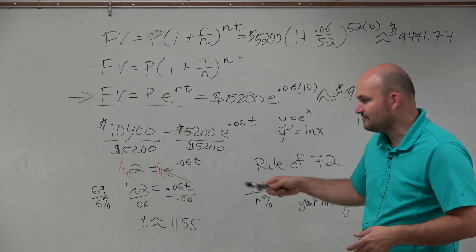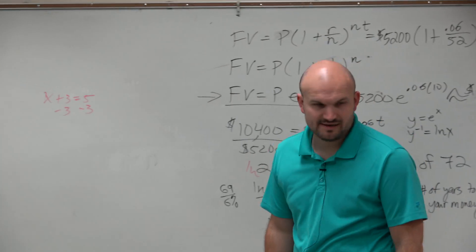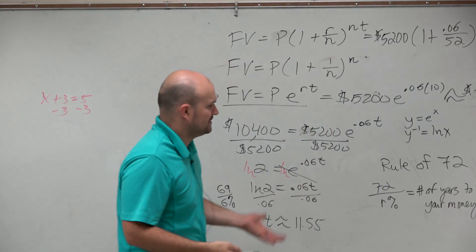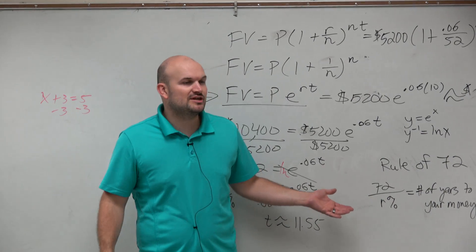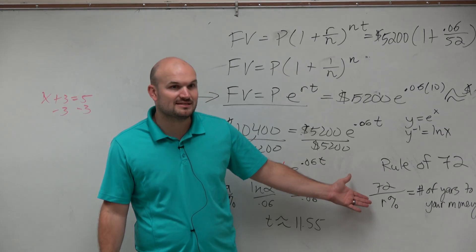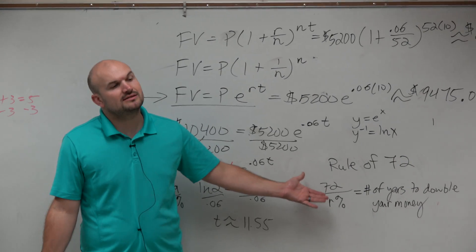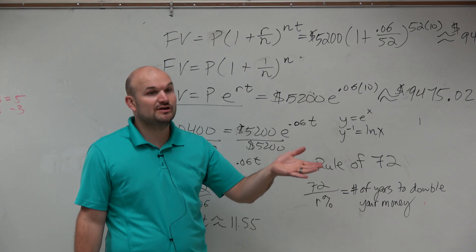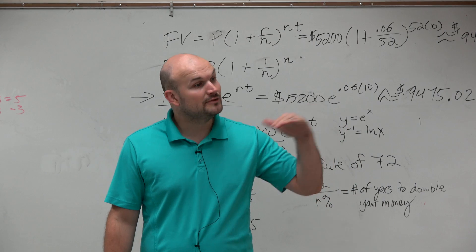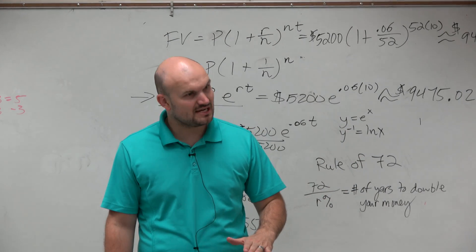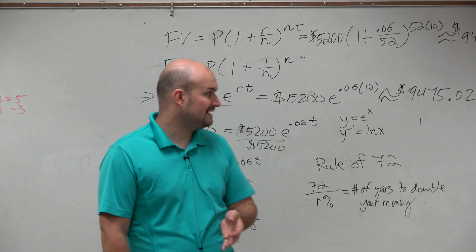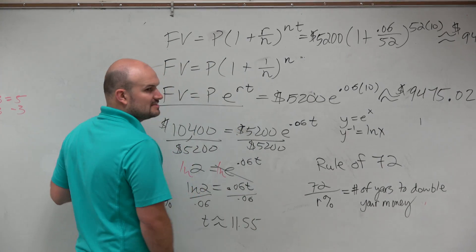And does that work? Take 72 divided by 6. 72 divided by 6, think about it in your head. How long is that? 12. If you're sitting there talking to your friends or you have to make a financial decision, is that good enough? Is that close enough for you to make some kind of decision? Yes, right? It's going to take 12 years. Hey, the higher your interest rate, the shorter time it's going to take to double your money. The lower your interest rate, the more time it's going to take, right? So that, ladies and gentlemen, is the rule of 72.